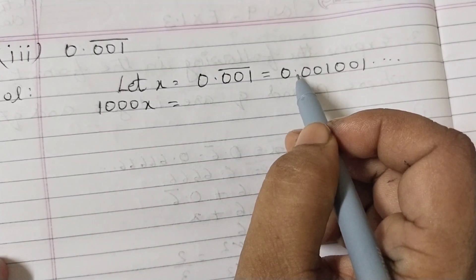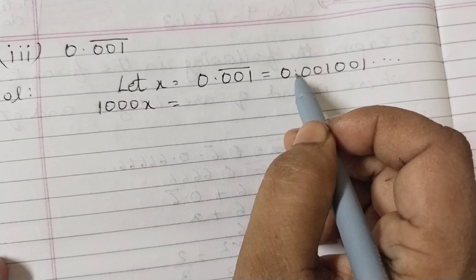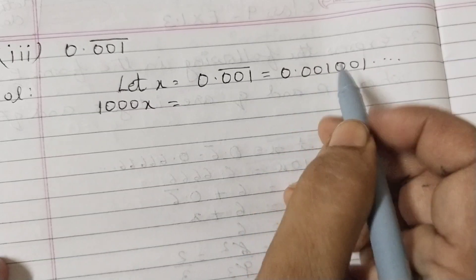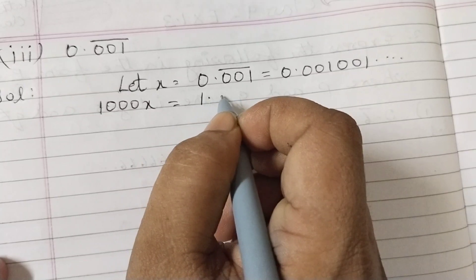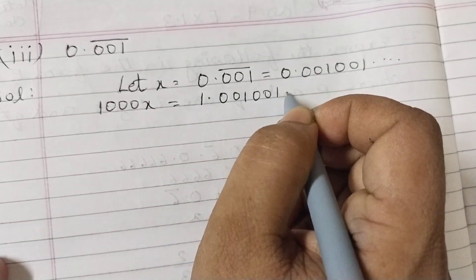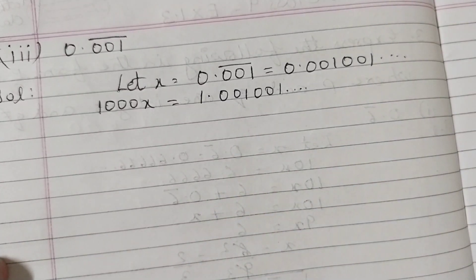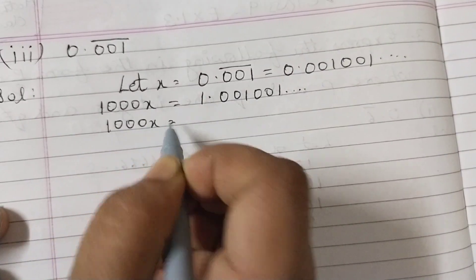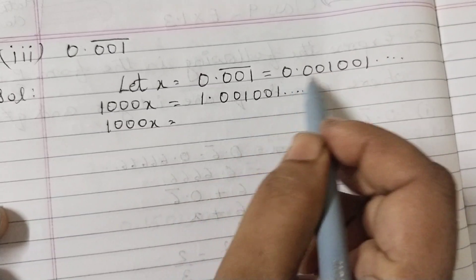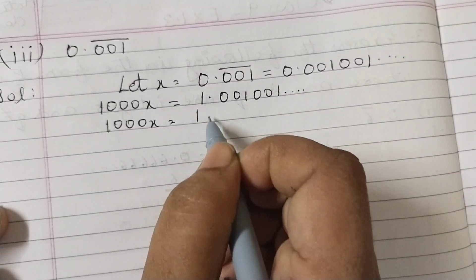1.001001... and so on. 1000x is equal to, we split this so that you get one part as this number. So 1 plus 0.001001... So this is exactly the same as x. What I did here is 1.001001, this number I split it as a whole number and a decimal part.